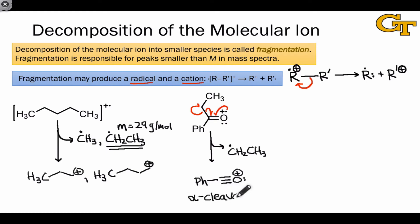Alpha cleavage is driven by the fact that this fragment that's actually detected, the cation, is resonance stabilized. So we're going from certainly a less stable to a more stable situation.